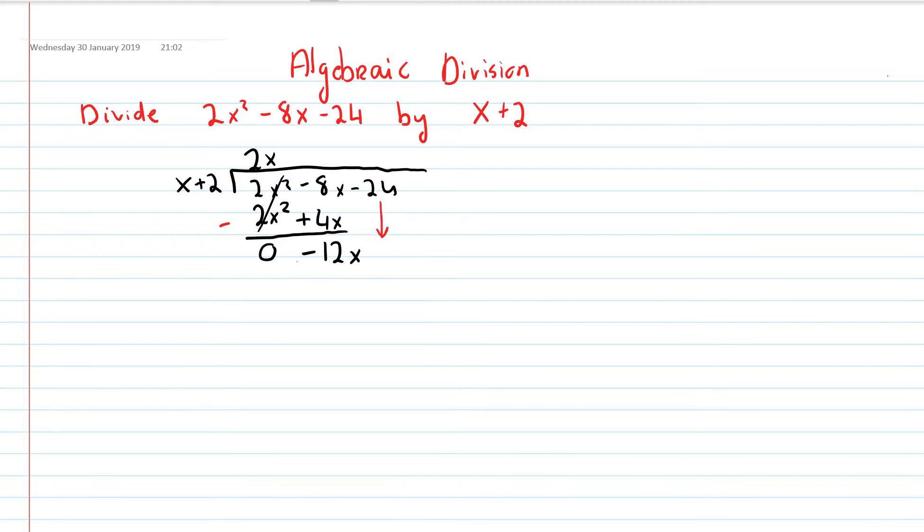Now I'm going to bring down my minus 24. I have minus 24 here. And I start the process all over again.